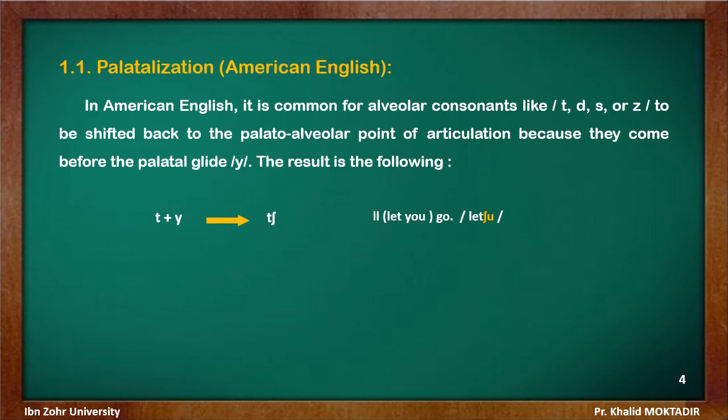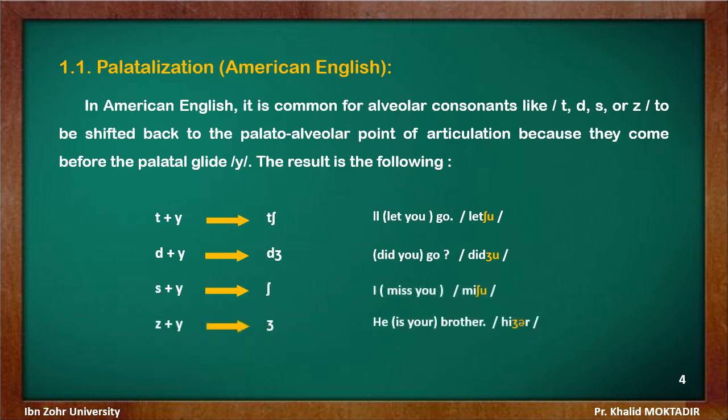Look at how T becomes a palatal alveolar in the example 'I let you go' — 'let you.' Similarly, D becomes palatal alveolar in 'did you go.' In the same manner, S and Z become respectively palatal alveolar sounds, as in 'I miss you' and 'Is your brother?'